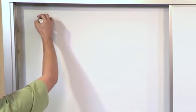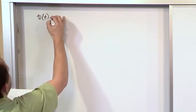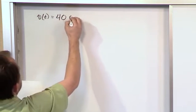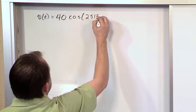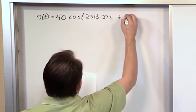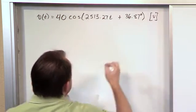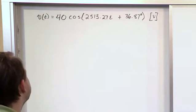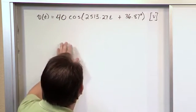Let's say you have a voltage that varies with time, V(t). And let's say that voltage looks like this: 40 times the cosine of 2513.27 times time, plus 36.87 degrees, in the units of volts. This is what a typical sinusoidal source might look like. Now it has some crazy numbers in it, but fundamentally it's the same.